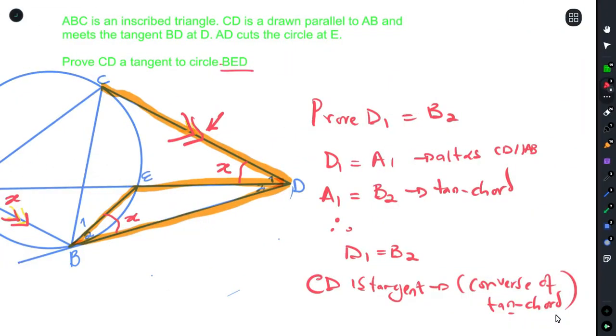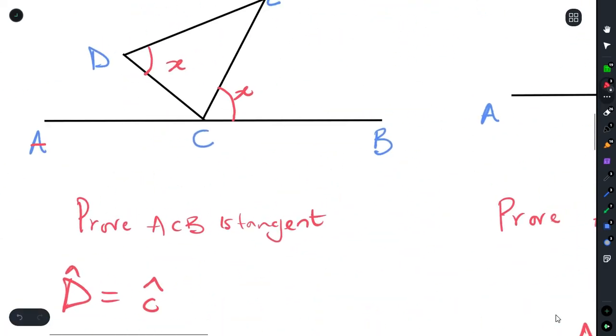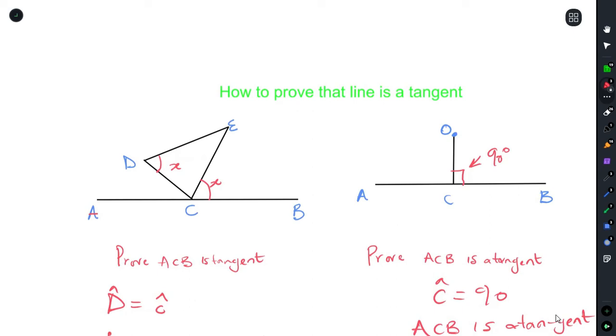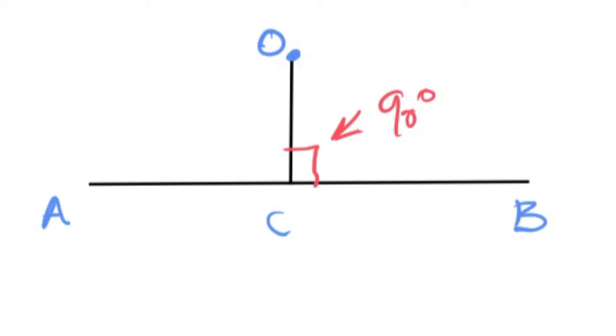Whenever you get a question that they tell you to prove a line is a tangent, it is always, like we said before, going to be one of these two. Either you're going to prove that those two angles are equal because it's tan chord, or you're going to prove that the angle between the two lines is 90 degrees because it is tangent perpendicular to radius.